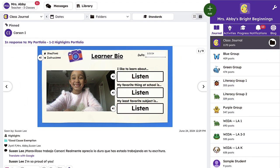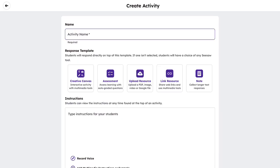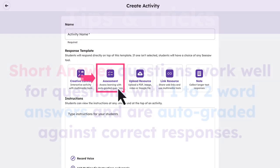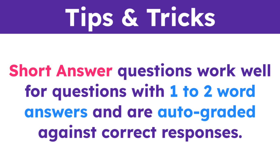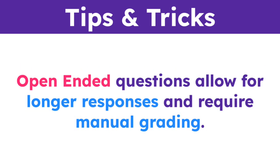To create a short answer or open-ended assessment question, tap the green Add button and select Create Activity or Assessment. Then select Assessment as the response template. Short answer questions work well for questions with one to two word answers and are auto-graded against correct responses. Open-ended questions allow for longer responses and require manual grading.